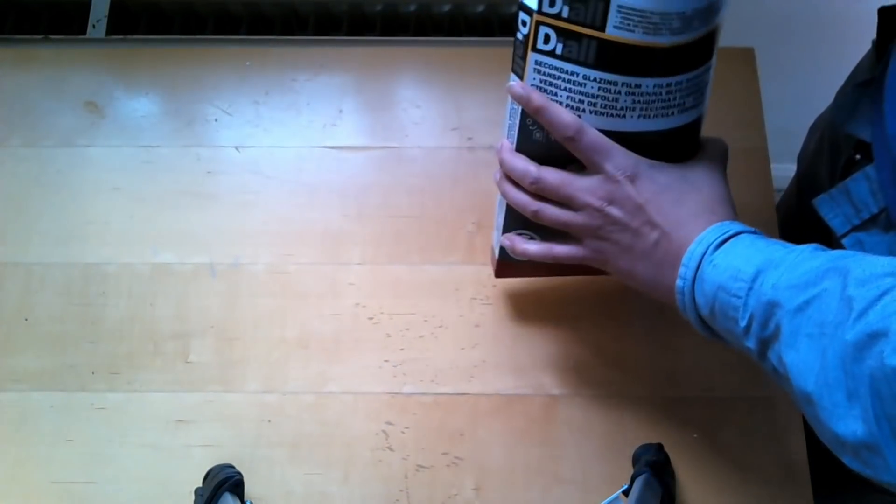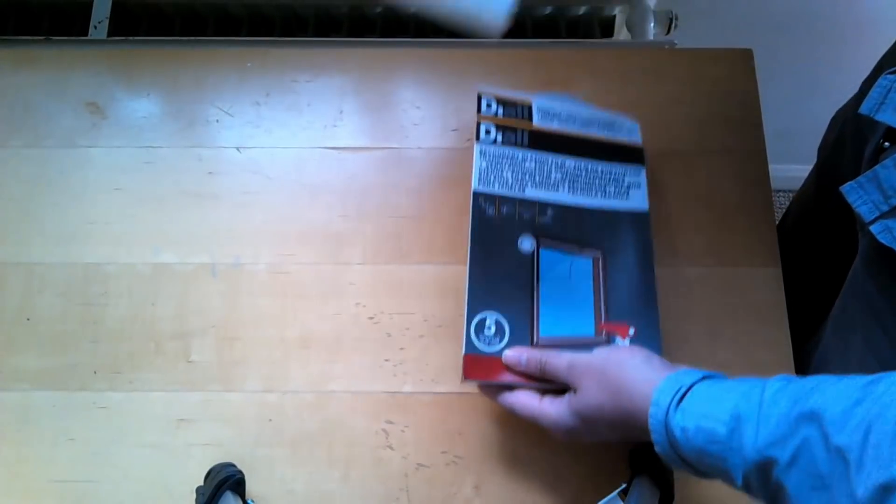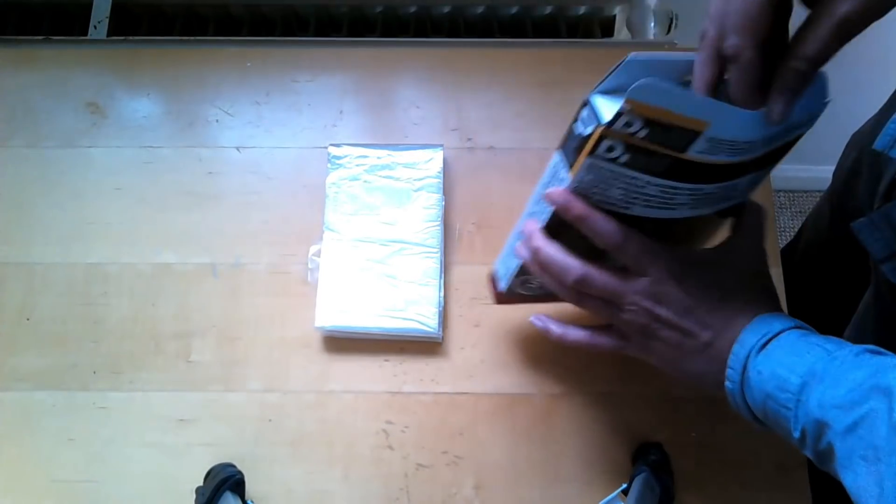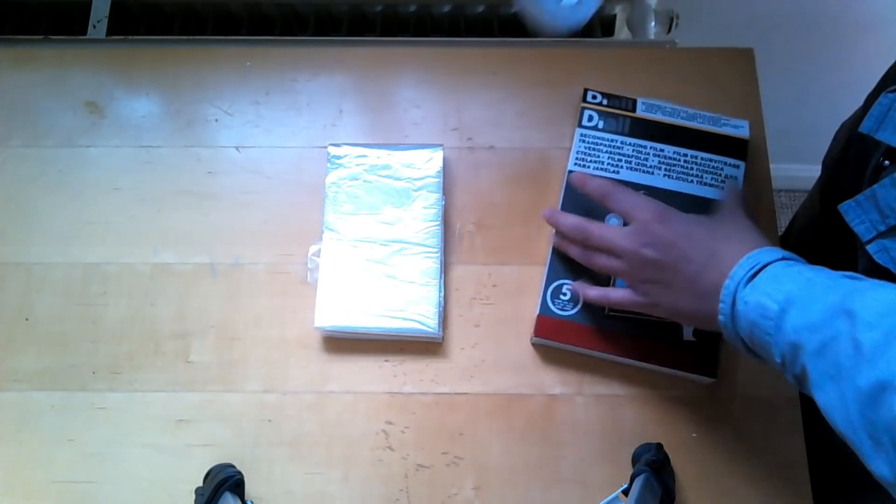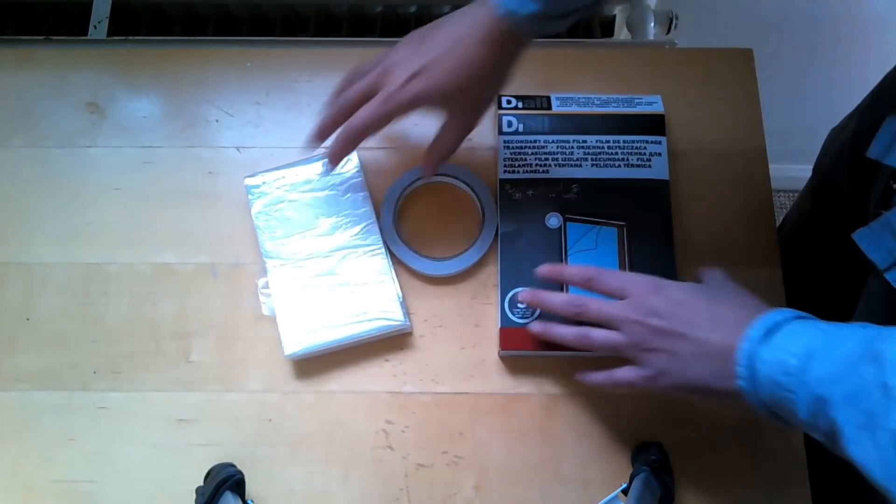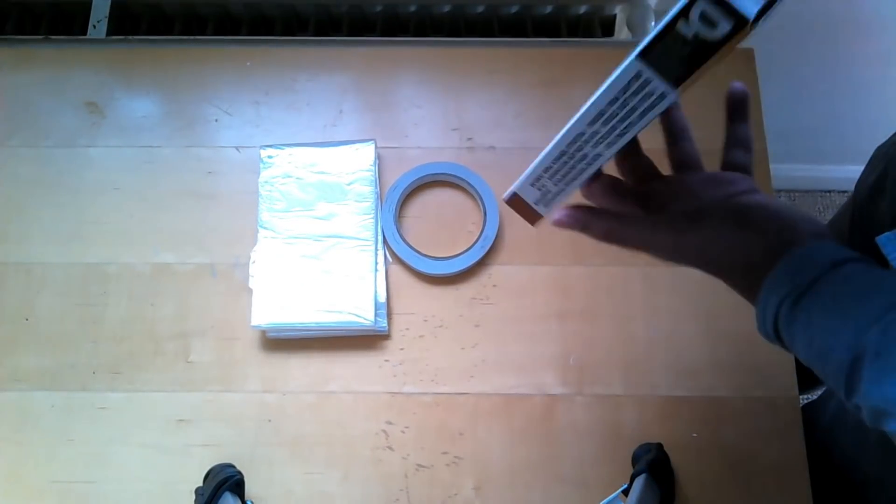Let's see what's inside the box. There is a glazing sheet which is about six meters square, three meters by two meters in length. There's also a double-sided tape and that's about it. There's nothing else inside the box.